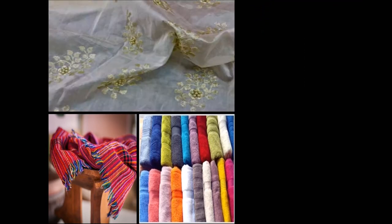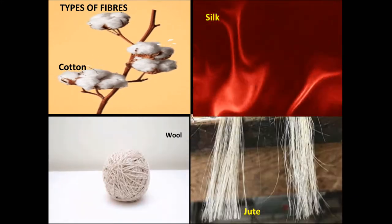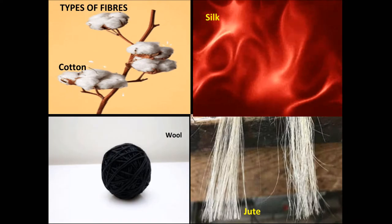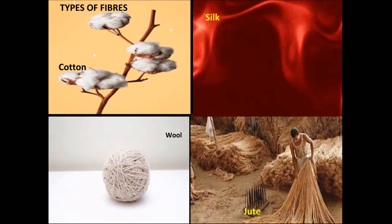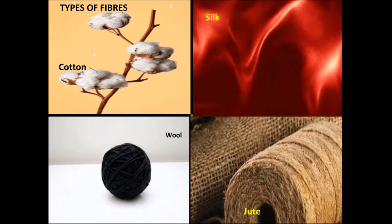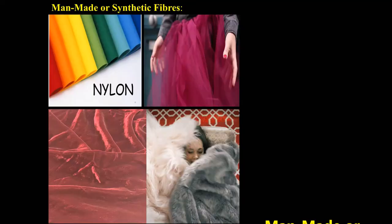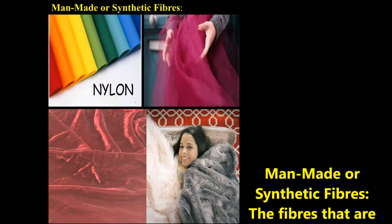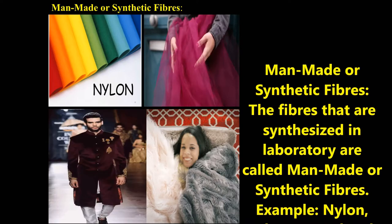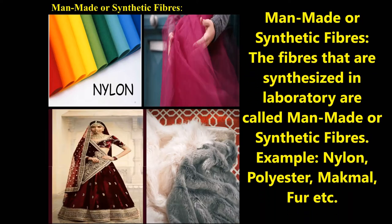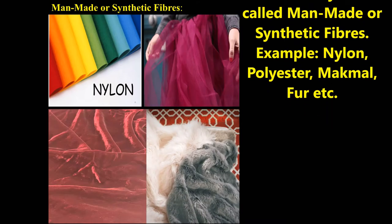Natural fibers are obtained from plants and animals. Examples include cotton, jute, wool, silk, etc. Man-made or synthetic fibers are synthesized in a laboratory. Examples include nylon, polyester, acrylic, etc.